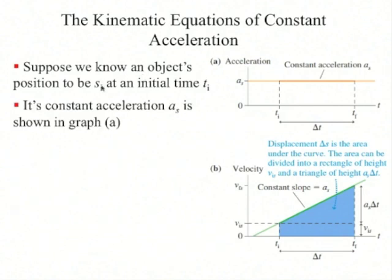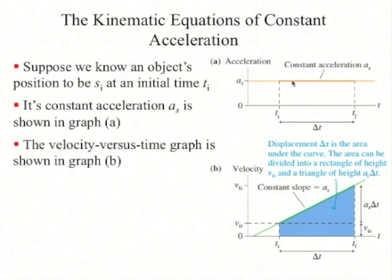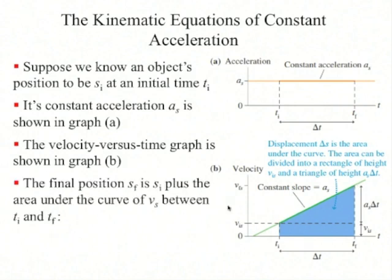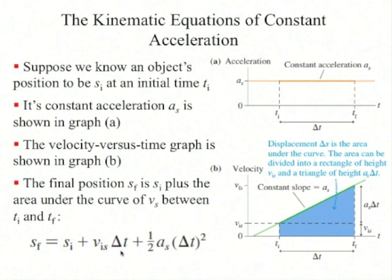Now suppose we know an object's position to be s_i at initial time t_i, and it has constant acceleration. Here is the velocity versus time graph, which has a constant slope. The final position equals the initial position plus the area under this curve — which is the area of a rectangle, v_i times delta t, plus the area of a triangle, one-half a times delta t squared. This is the second kinematics equation.